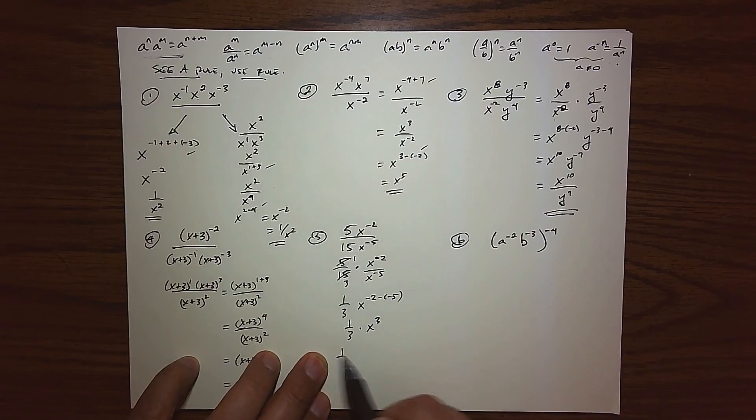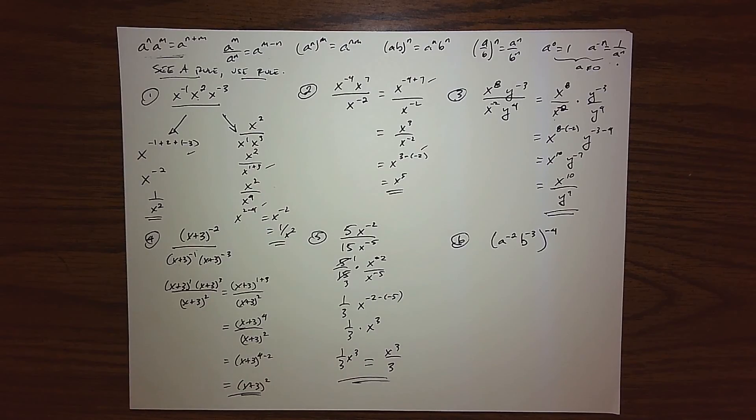So you can write your answer as 1 third times x to the third, or x to the 3 over 3. Both of these are equivalent. It just kind of depends on where you want to write that numerator. So there we go. So again, see a rule, use a rule, have an opportunity to take advantage of it.